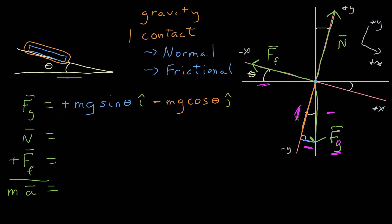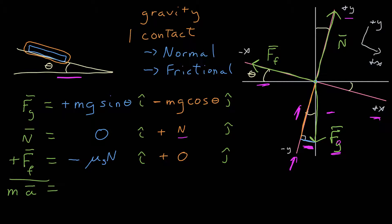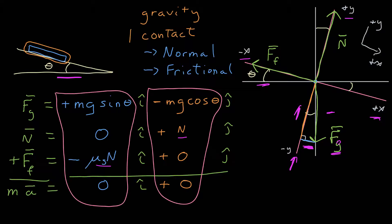Looking at the coordinate system, the x component is on the positive x side, and the y component is on the negative y side. For the normal force, the x component is zero because it only lies along the y axis — its entire magnitude is the y component, and it's in the positive y direction. The force due to friction only lies along the x axis, so its entire magnitude is the x component, pointing in the negative x direction. Substituting in our static friction model: the magnitude of the frictional force is mu sub s times the magnitude of the normal force. Since the object is not moving, the acceleration in both dimensions is equal to zero.